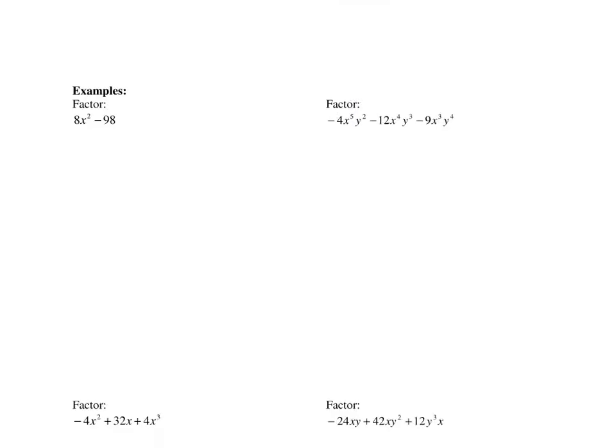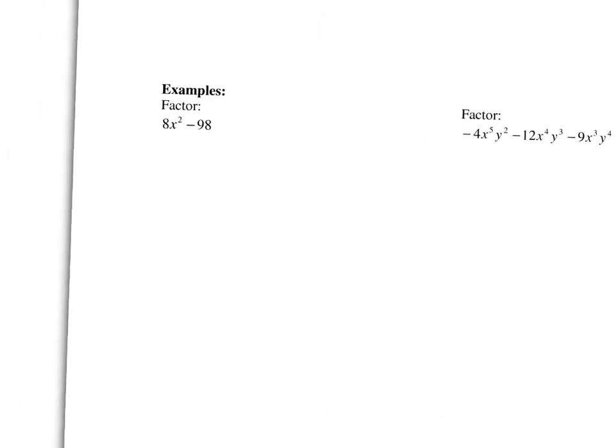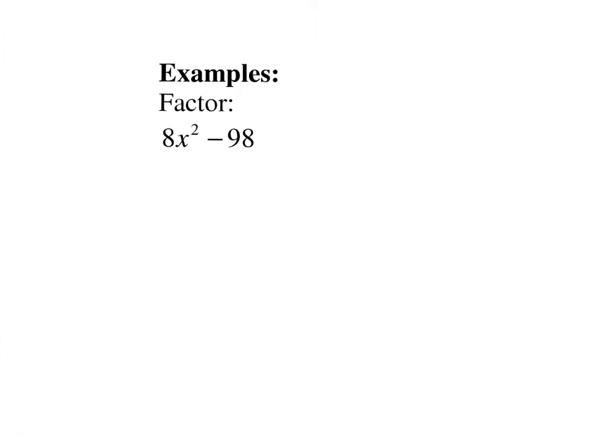We're going to start with 8x squared minus 98. The first step is always to look for a GCF. Is there anything common here? It looks like they're both divisible by 2. So we'll take out a 2 as a GCF. That's the first step. What does that leave us with? 4x squared minus 49.